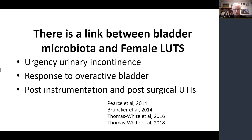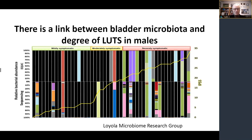Others have shown — and there's quite a good body of literature — that there is a link between the bladder microbiota and female lower urinary tract symptoms. This has been shown with urinary urgency incontinence, the response to treatment in overactive bladder, and post-instrumentation and post-surgical urinary tract infections. It's not a specific organism, but a pattern of organisms that links the microbiome to female lower urinary tract symptoms. Recently, research groups have shown there's a link between the bladder microbiota and the degree of lower urinary tract symptoms in males as well. There is definitely a pattern arising that LUTs in males and females are associated with patterns in the microbiota.